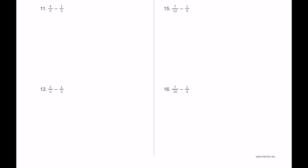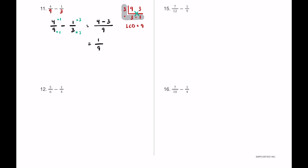For number eleven we have four-ninths minus one-third — ninths and thirds. Nine and three are both multiples of three: three goes into nine three times and into three one time. Three times three is nine, nine times one is nine — so the LCD is nine. Four-ninths times one over one, one-third times three over three: four times one is four, one times three is three, so four minus three equals one — giving one-ninth.